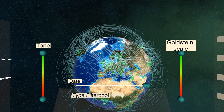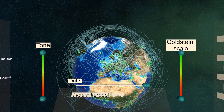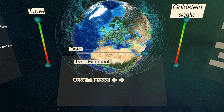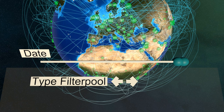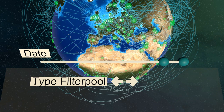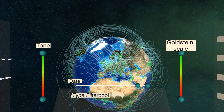Filters are used to adjust which events are presented on the globe. All currently active filters will be right in front of you. The selected time period in which events occurred can be adjusted on the date axis. For example, let's look at the last three days of news reports by grabbing the handle and pulling it towards the desired date. The events presented on the globe will be updated with our new filter in place.